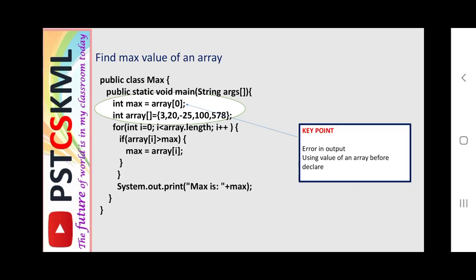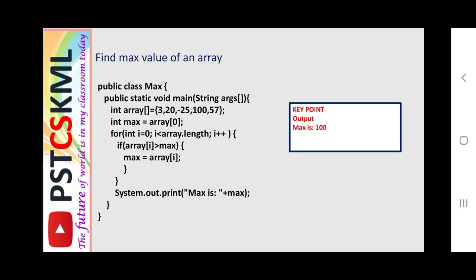Inside the loop, if the current array value is greater than the maximum, we update the maximum. However, the problem with this coding is that before you use the array, you declare maximum as array[0], but the program doesn't know the value yet. An error will occur because you are using the value of an array before declaring it. You must declare the array first — for example int array[] = {3, 20, 90, 25, 157} — and then declare integer maximum as array[0].